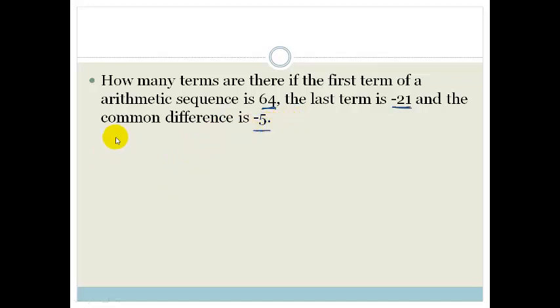They want to know how many terms there are in sequence. So let's just see what they've given us. First of all, let's write down Tn is equal to a plus n minus 1d. And what do they want? They want the number of terms, n. They've told us that the first term, a, is 64. They've told us the common difference, d, is minus 5. And they've told us the last term is minus 21.